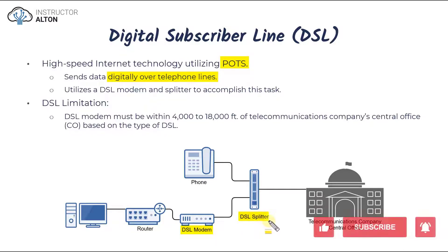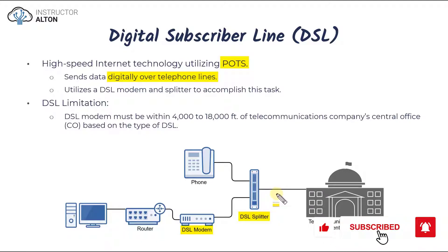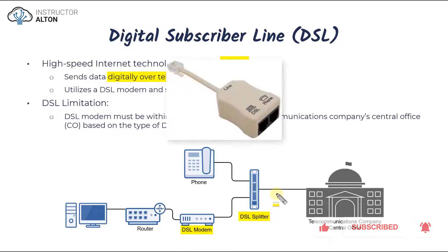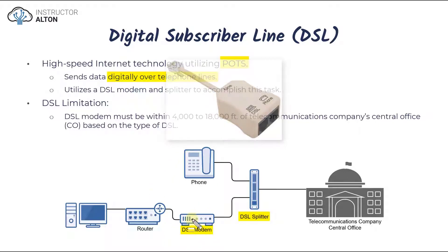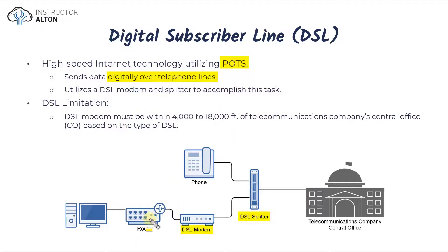To do so, it utilizes a combination of a DSL modem and a DSL splitter. You have your phone line jack on your house, you plug in a splitter, and the splitter splits that up into two different outputs — one to go to your modem and one to go to your phone. From your modem it's our standard setup: we have a router and then we have our LAN within our house.